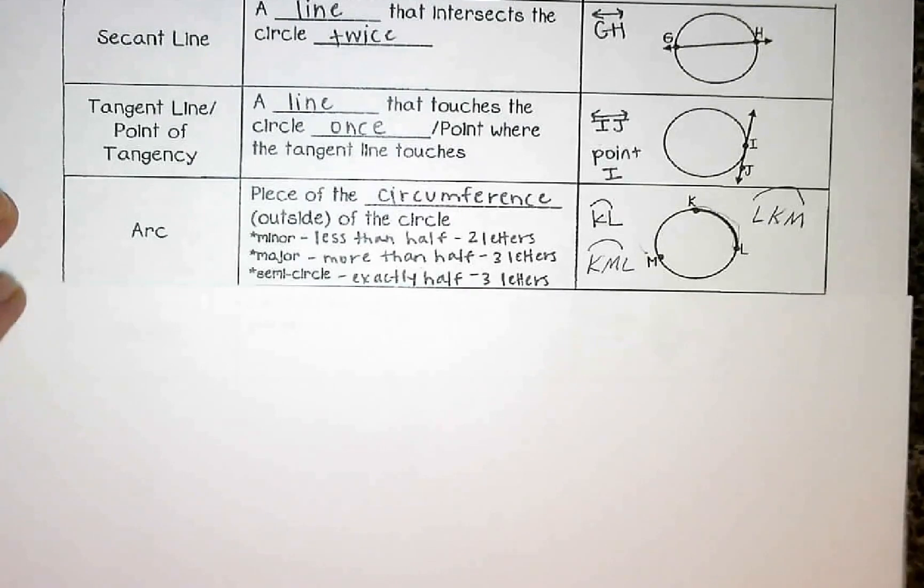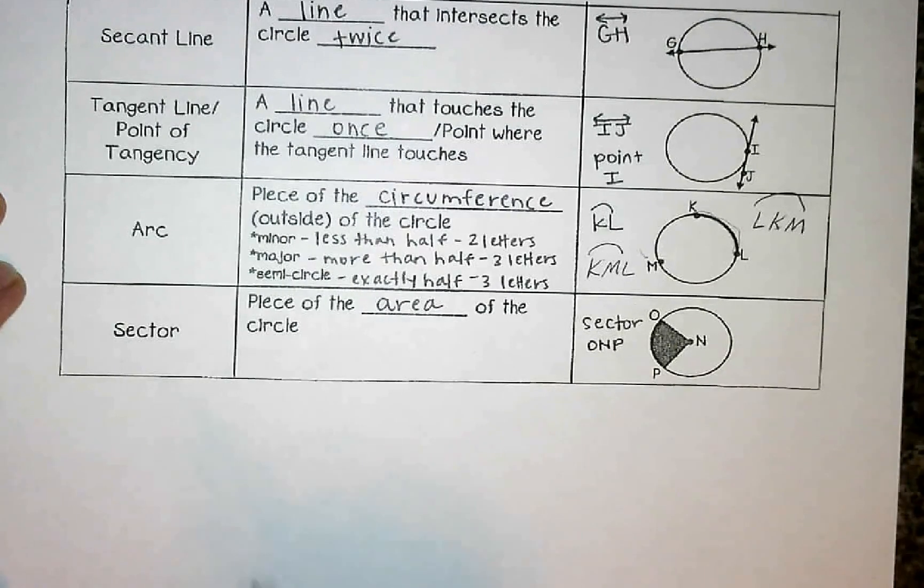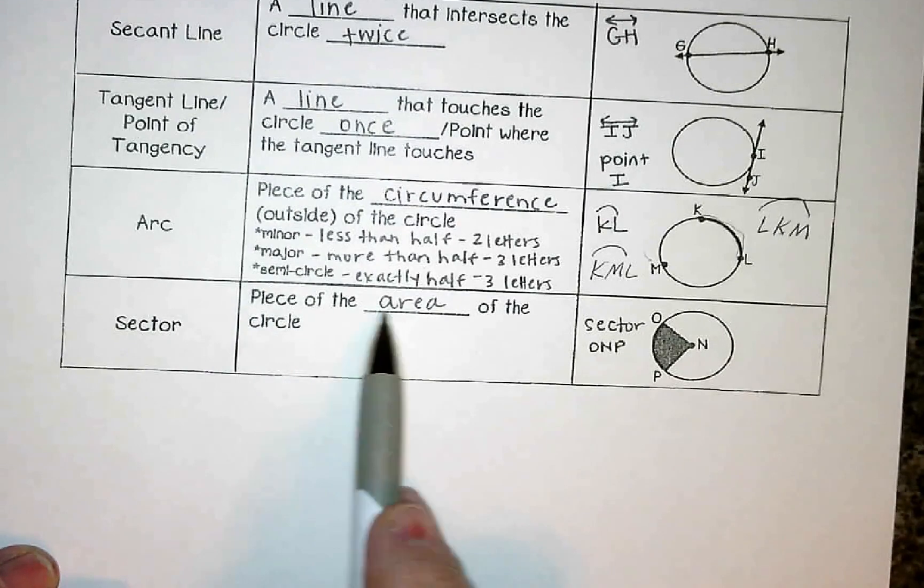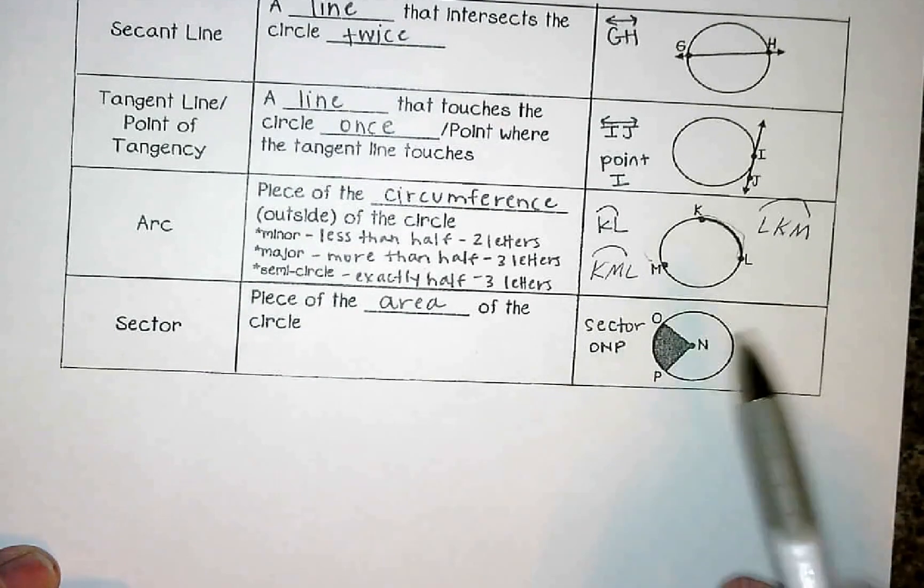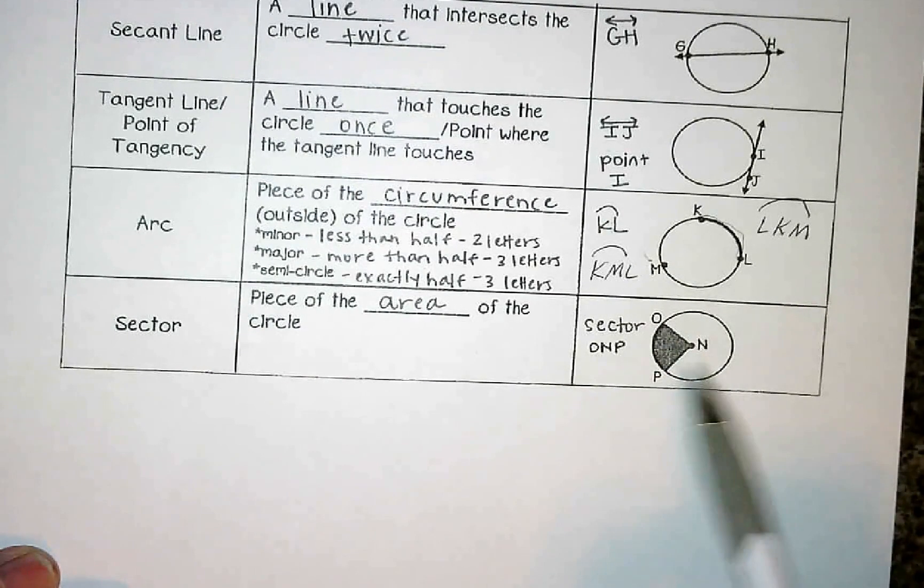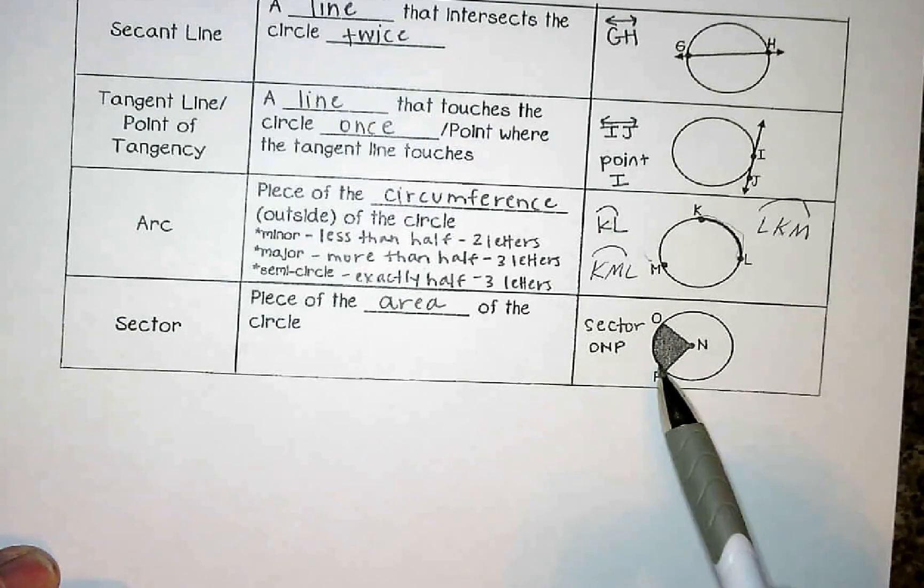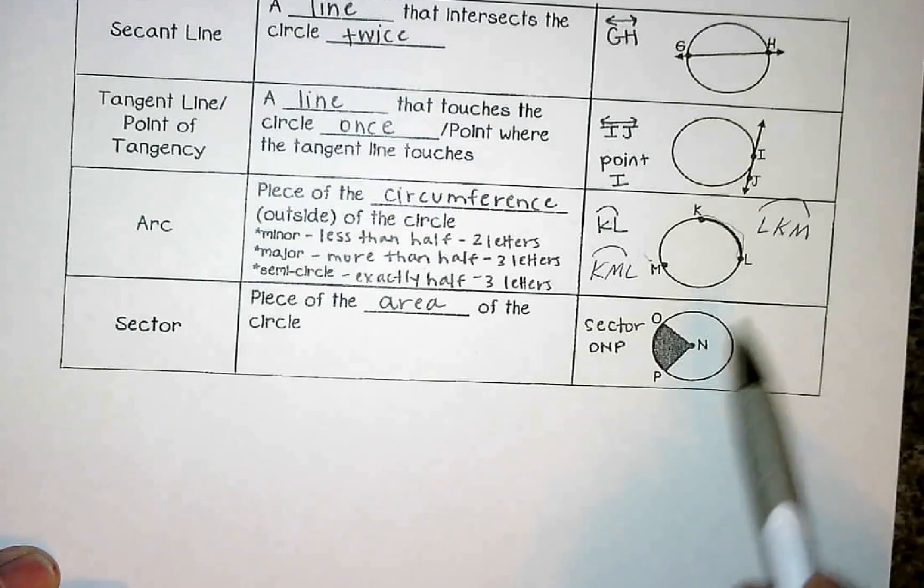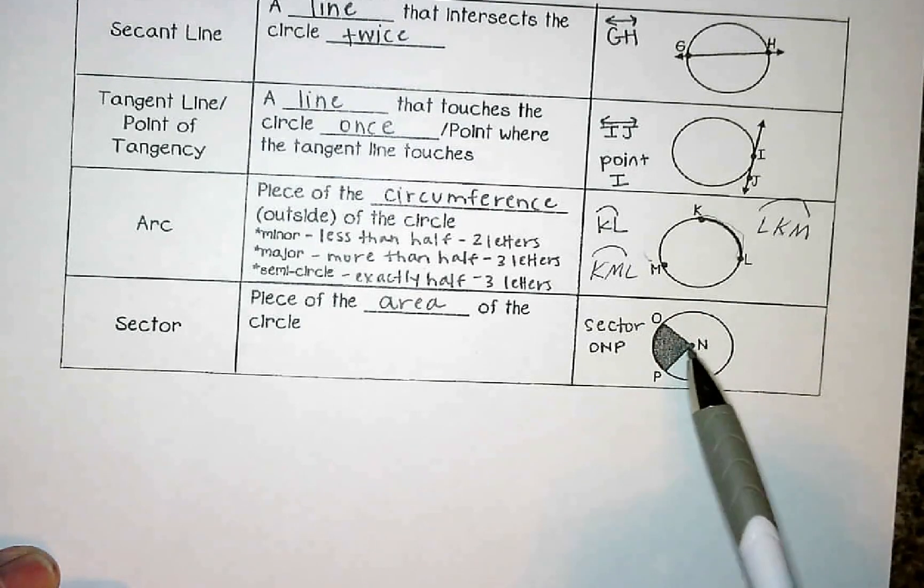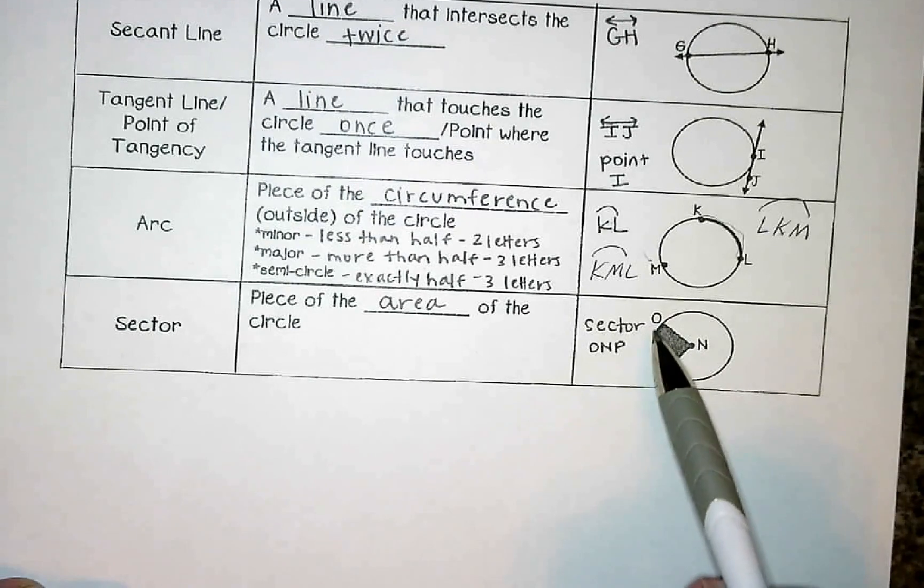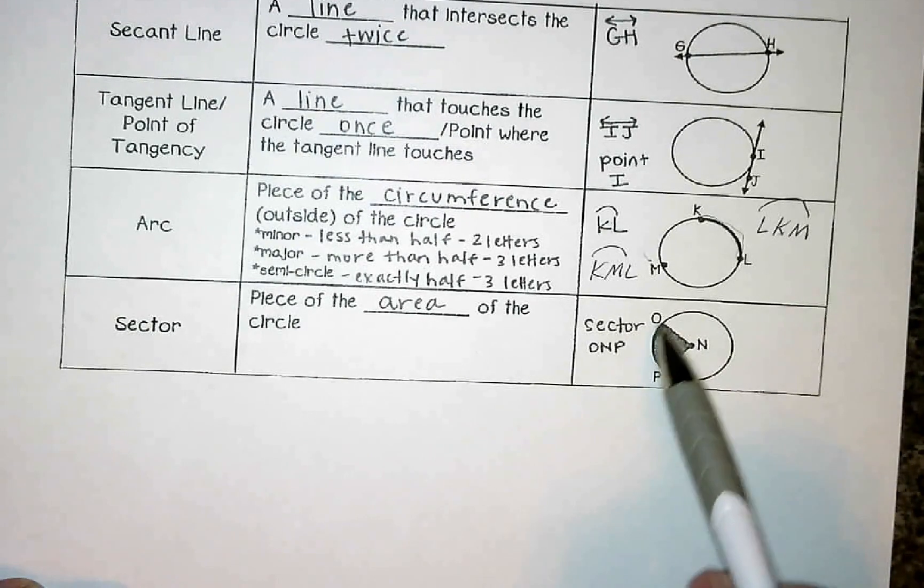And the last vocabulary word that we need to pay attention to is called a sector. A sector is the piece of the area of the circle. So you can see here area is going to be covering this whole piece here. So a sector is like a piece of pie or a piece of pizza, where two of the sides are radii. So N to O and N to P are both radius. The other side is an arc. So it's not a triangle, but it's got those three sides, and it's part or a piece of the area. So make sure you focus on what's a line and what's a segment.